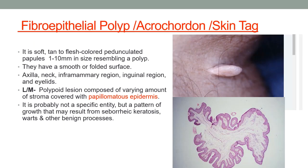The next common entity is fibroepithelial polyp — the skin tag. It is a soft, flesh-colored, pedunculated papule which resembles a polyp, with a smooth or folded surface. It may be present in various locations like the axilla, neck, inframammary region and groin. On light microscopy, they are polypoid with a stroma covered by papillomatous epidermis. It is not a specific entity but a pattern of growth that can result from seborrheic keratosis or warts.